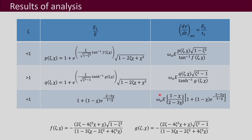This is the result obtained from the derivation. For zeta less than 1, the underdamped case, this is the normalized peak voltage expression. It contains a function f, and a somewhat complicated expression in terms of zeta and chi, multiplied by the square root of 1 minus 2·zeta·chi plus chi squared, with an exponential term. This is denoted as the function p of zeta and chi.